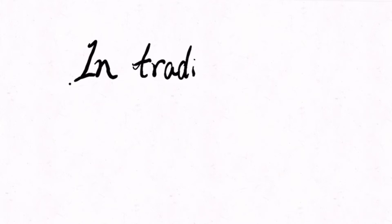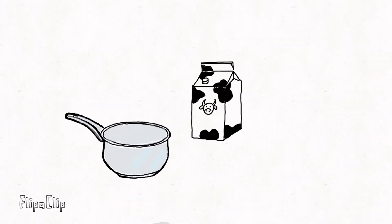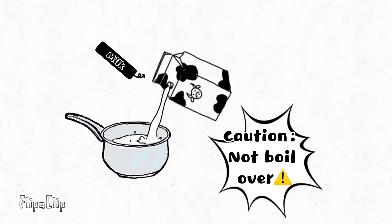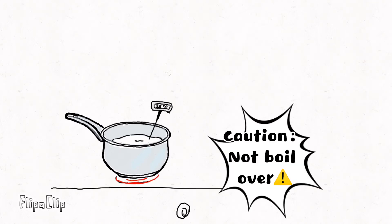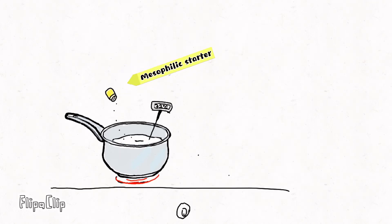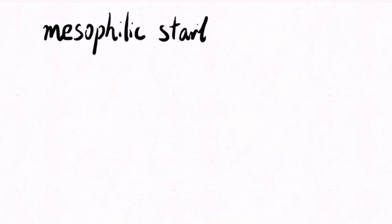In traditional cheese making, these two steps can be skipped. Pour the milk in a pot and slowly heat the milk over low heat to 32 degrees Celsius. Then, sprinkle the mesophilic starter over the milk.